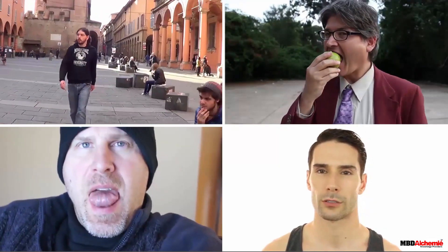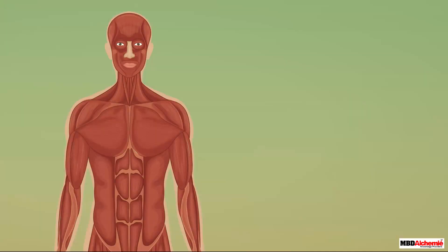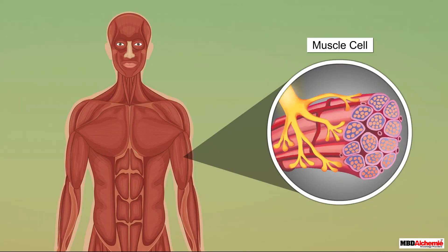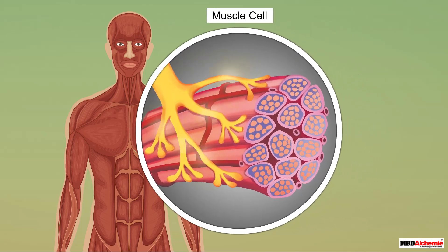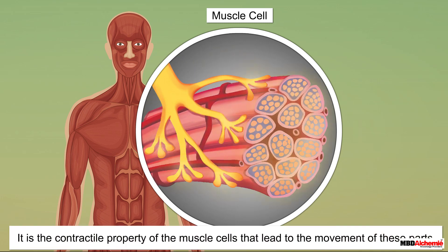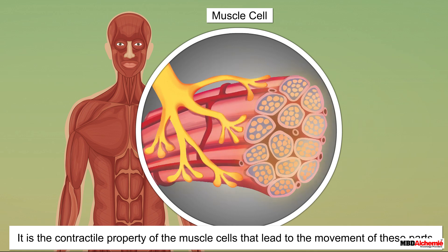All these movements occur due to the muscle cells. Let us go inside a human body and find out more about the muscle cells. It is the contractile property of the muscle cells that leads to the movement of these parts. This type of movement is called the muscular movement.